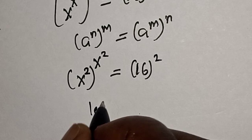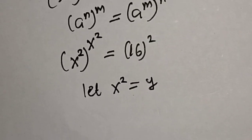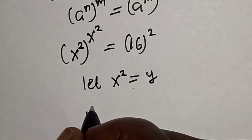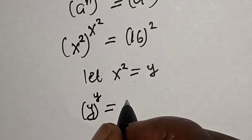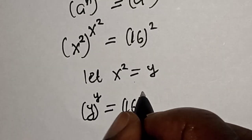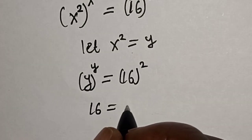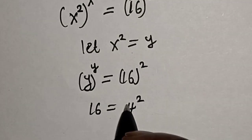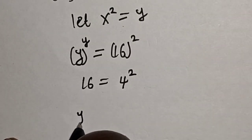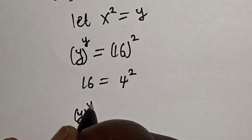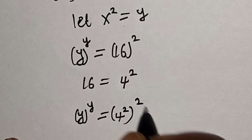Now let s squared equal y. Then we have y raised to power y is equal to 16 squared. But 16 is equal to 4 squared, so let's replace: we have y raised to power y is equal to 4 squared, then squared.